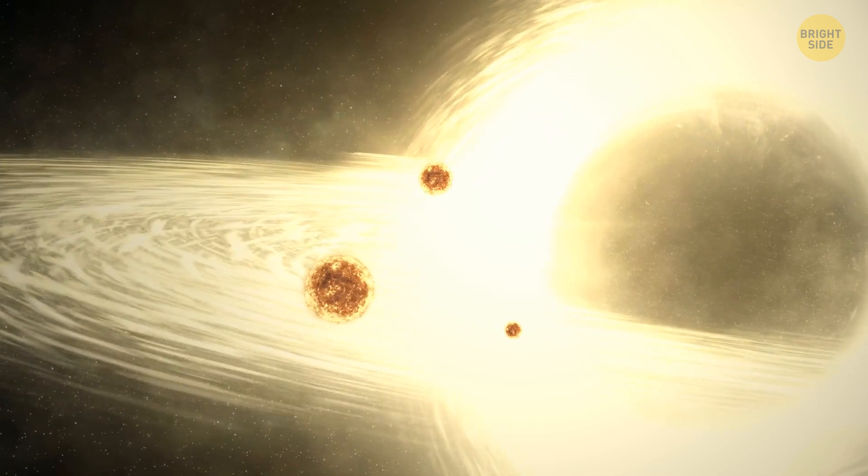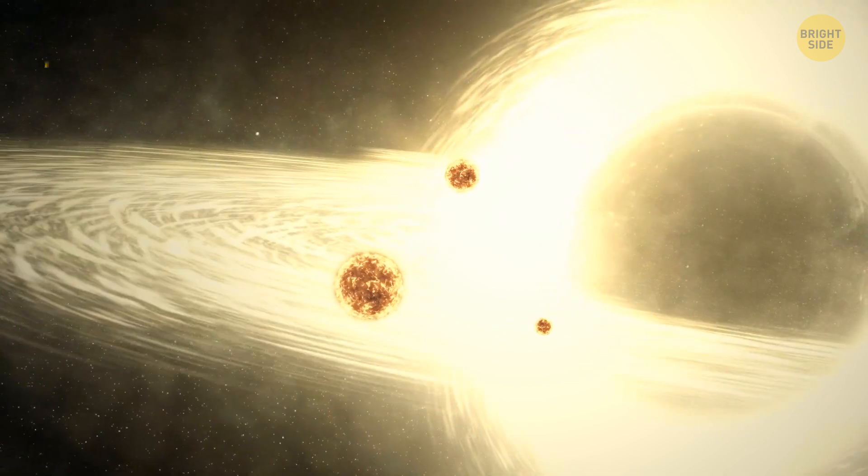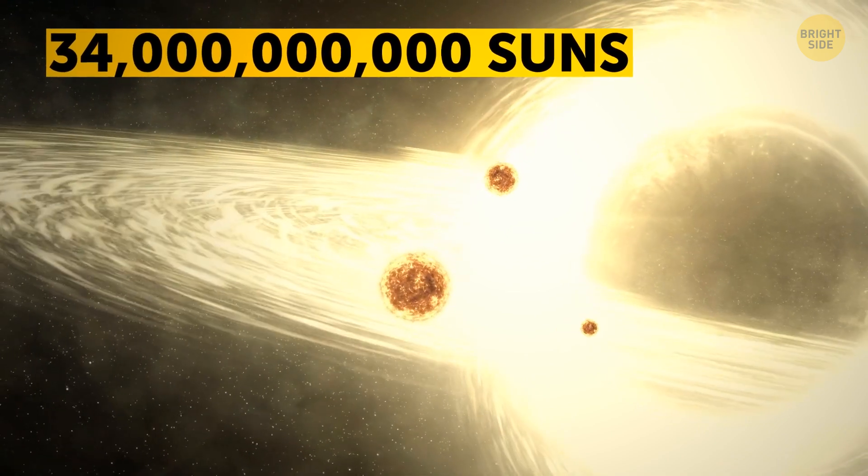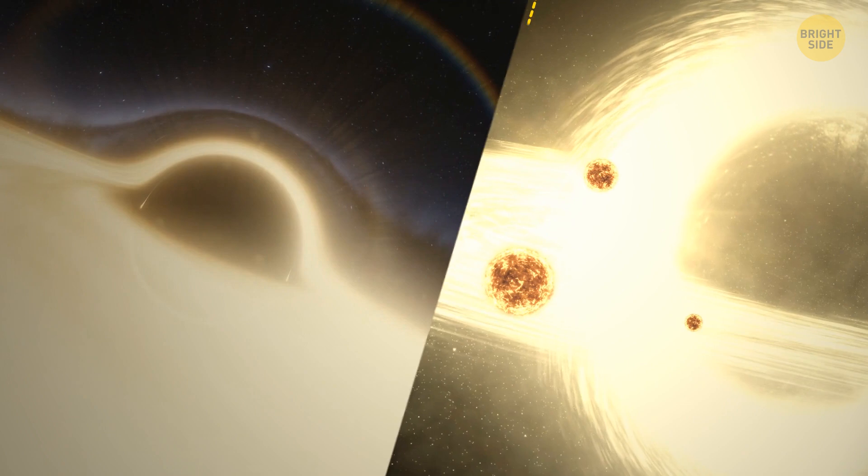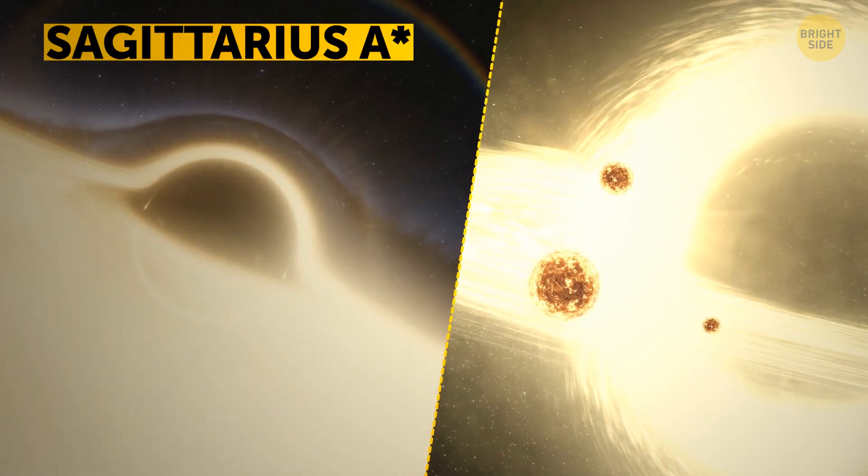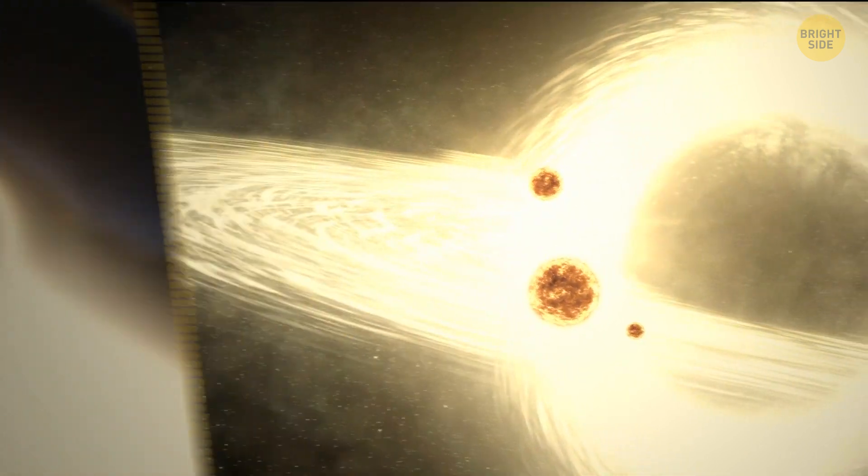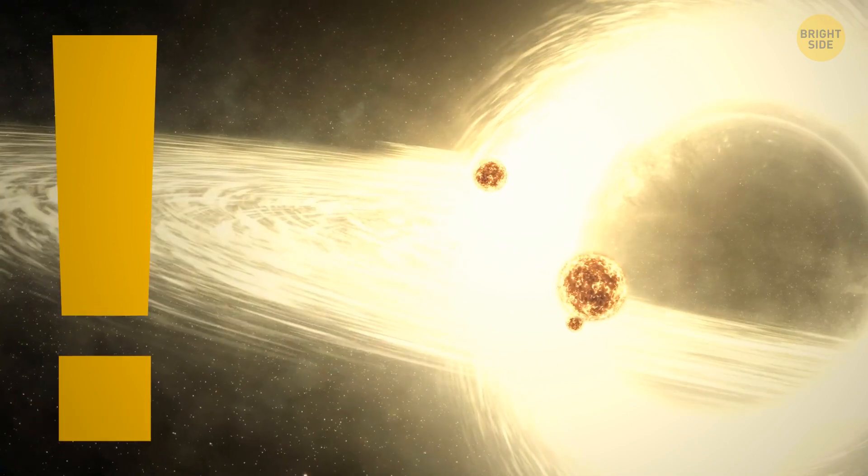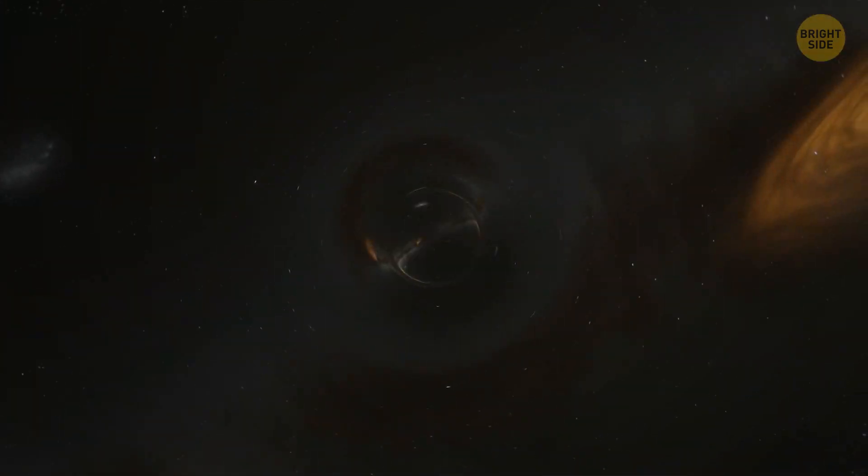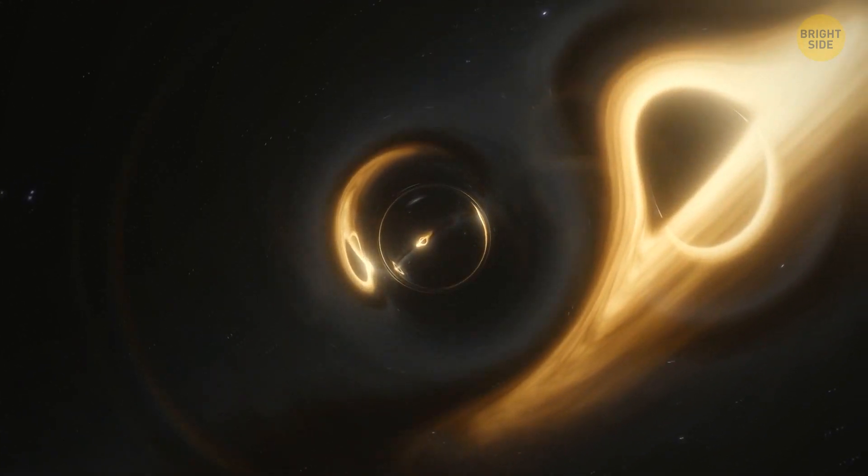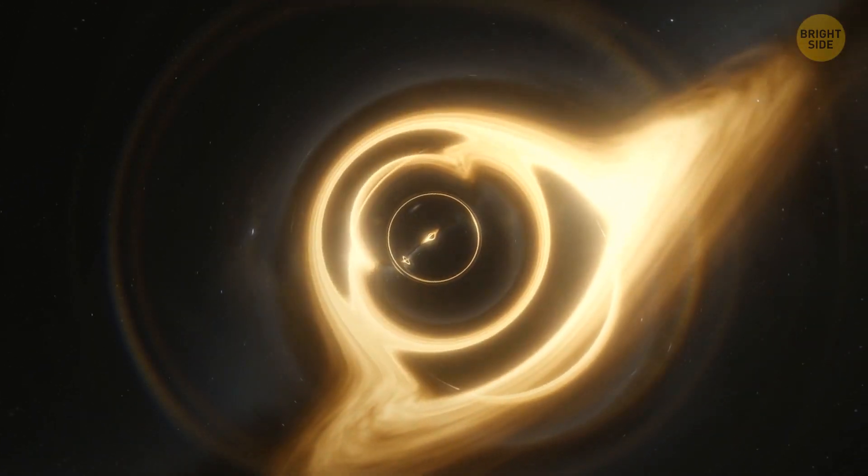The hungriest black hole astronomers have spotted so far weighs as much as 34 billion Suns and is about six times bigger than the one at the center of the Milky Way. It eats the equivalent of one Sun every day. Sometimes, black holes even devour others of their kind that happen to be too close to them.